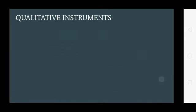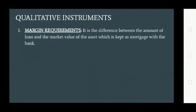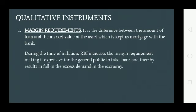Now the qualitative instruments. The first is margin requirement — it is the difference between the amount of loan and the market value of the asset kept as mortgage with the bank. During the time of inflation, RBI increases the margin requirement, making it expensive for the general public to take loans, resulting in a fall in excess demand in the economy.